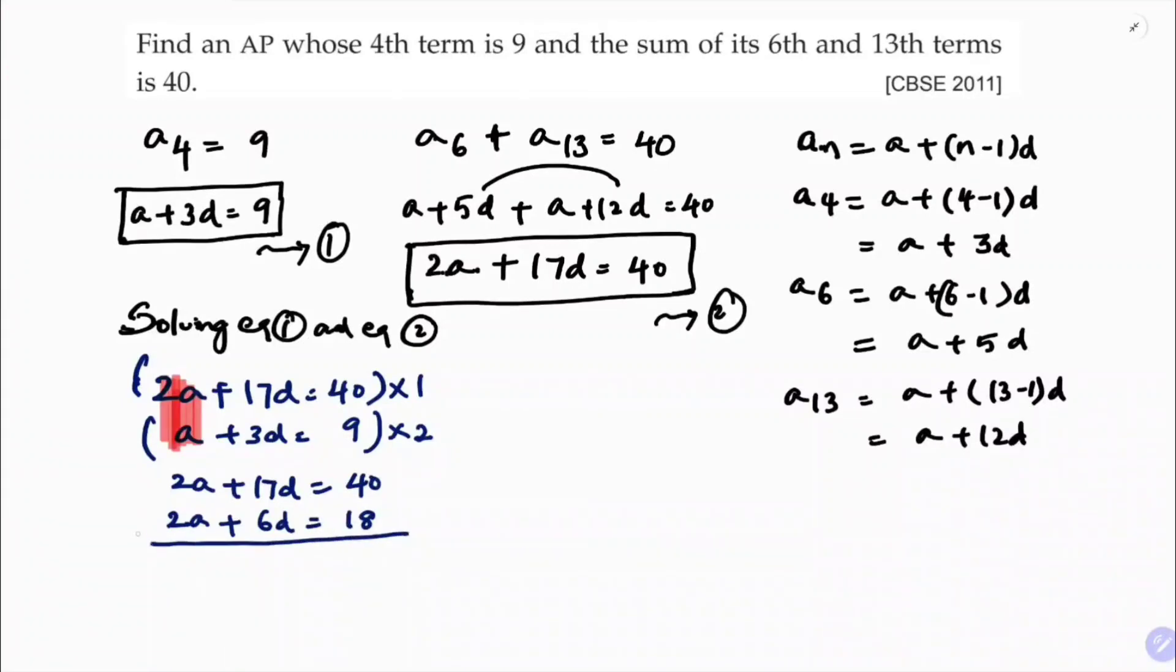So if I will simplify, I will subtract minus, minus and here minus. So I will get, this two will get cancelled. 17 minus 6 is 11D. 40 minus 18, 22.